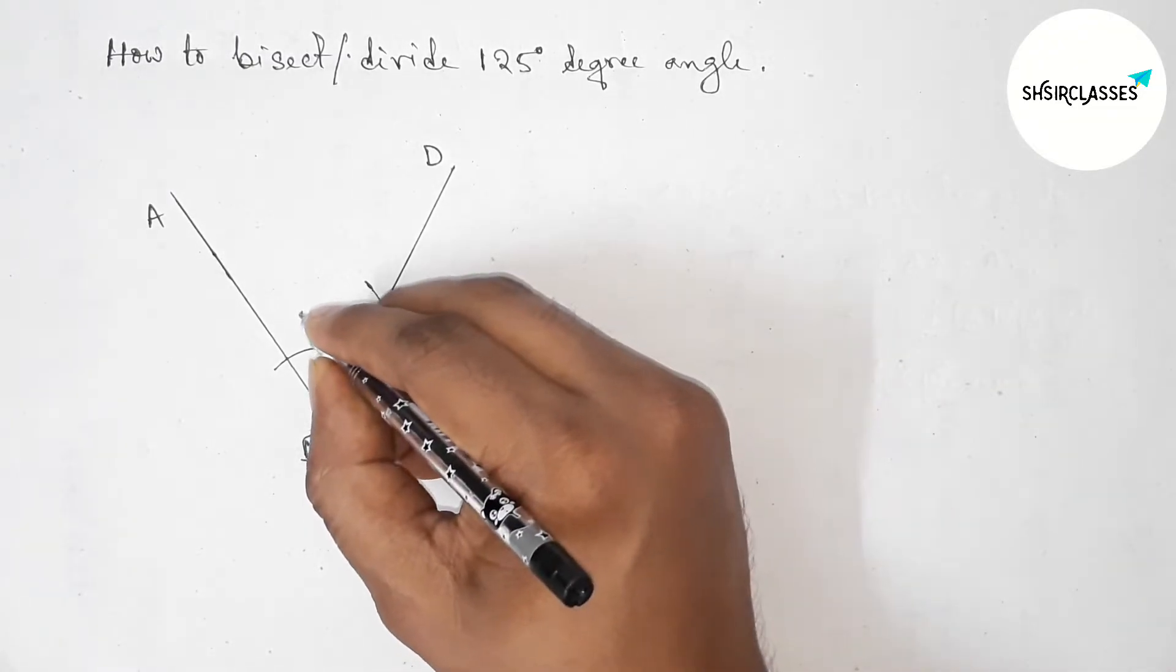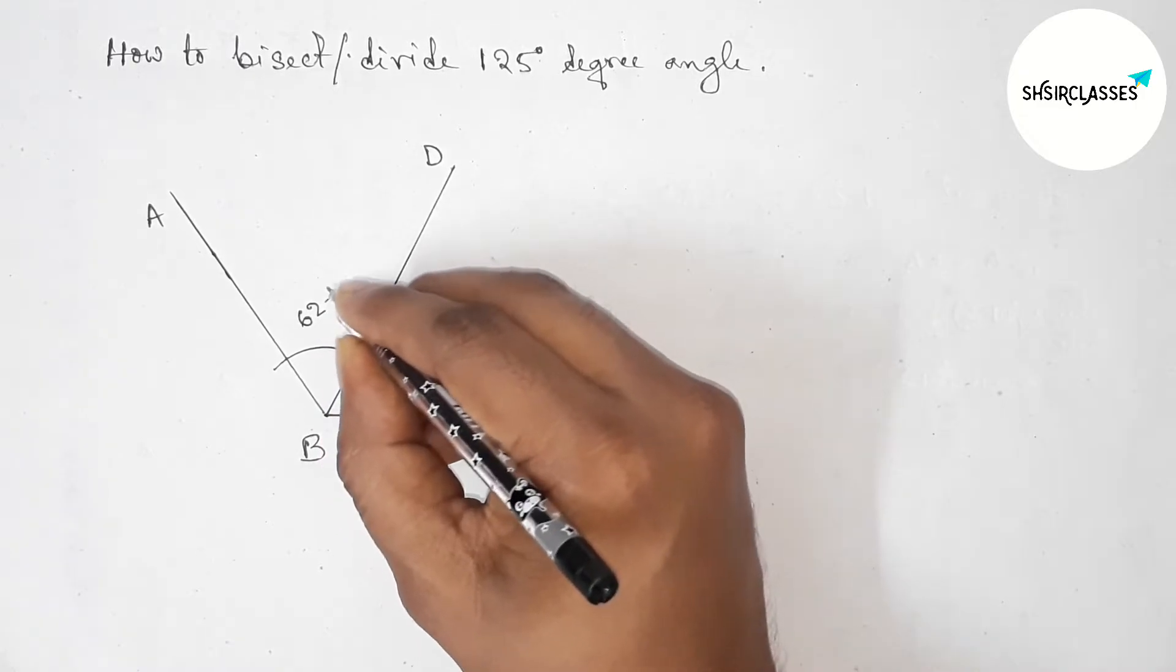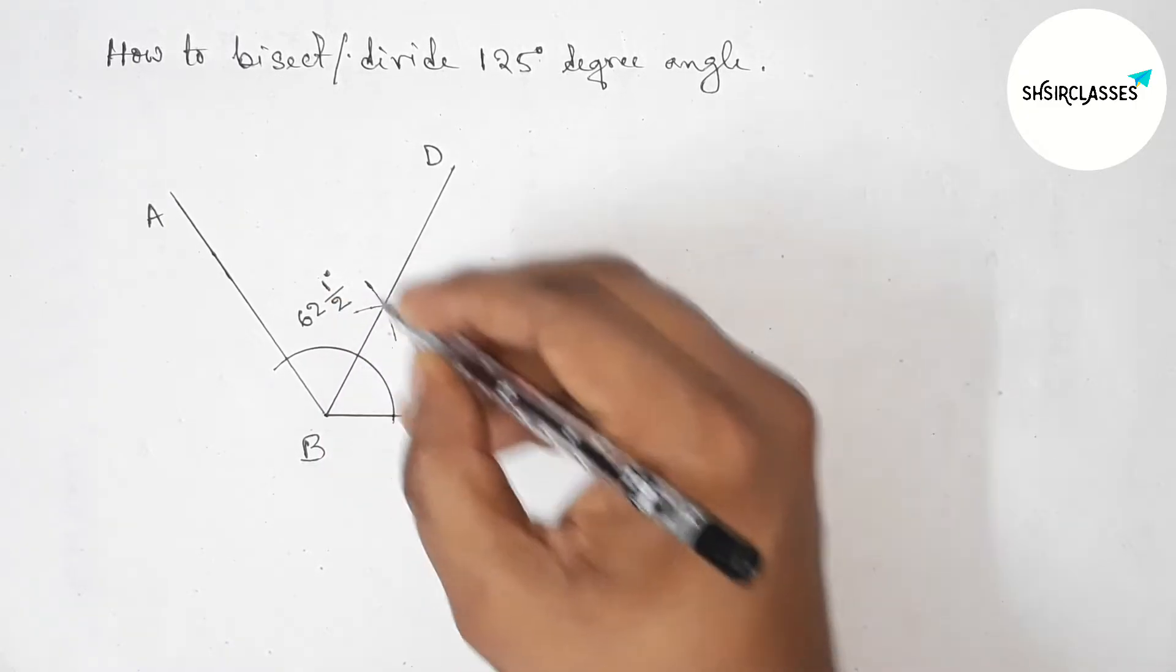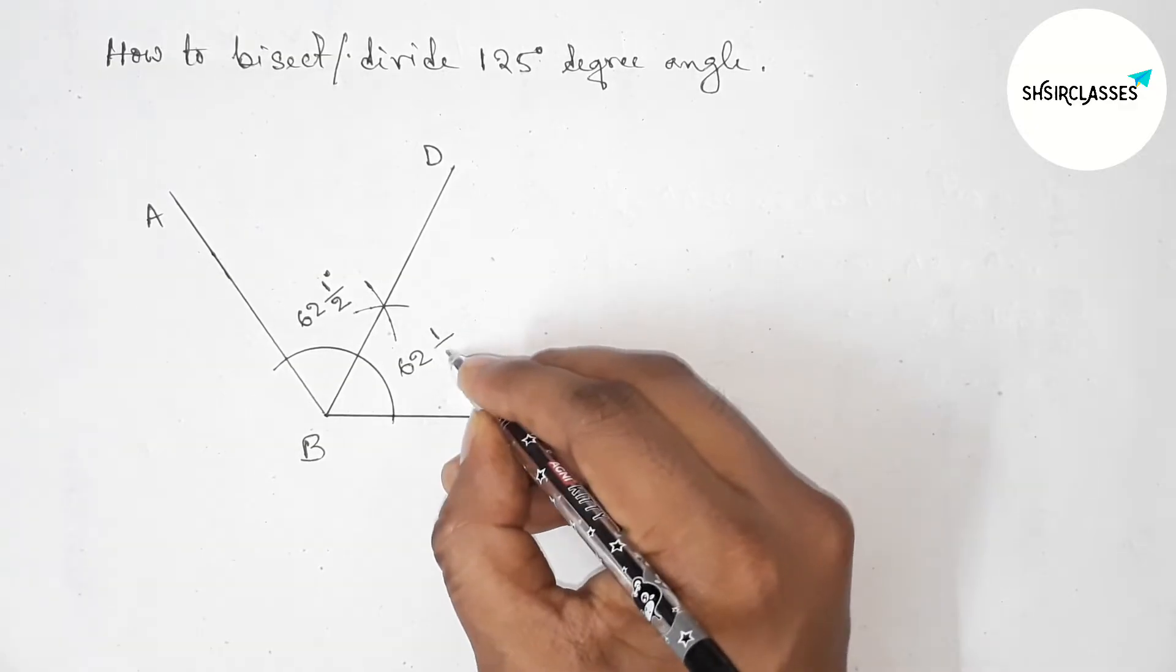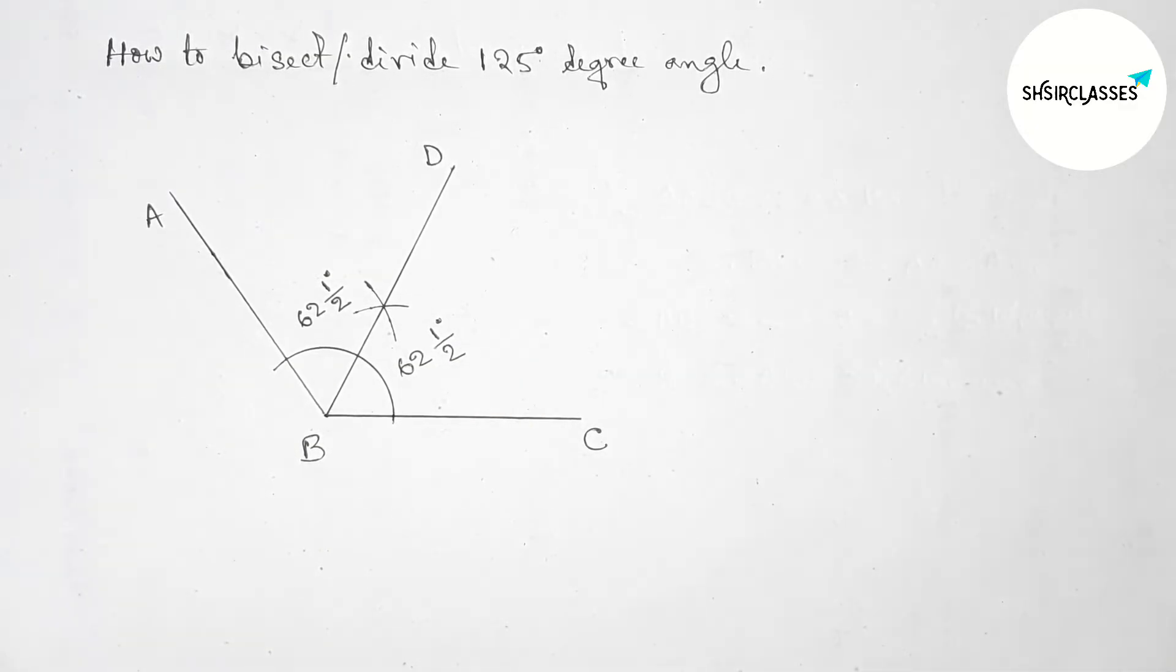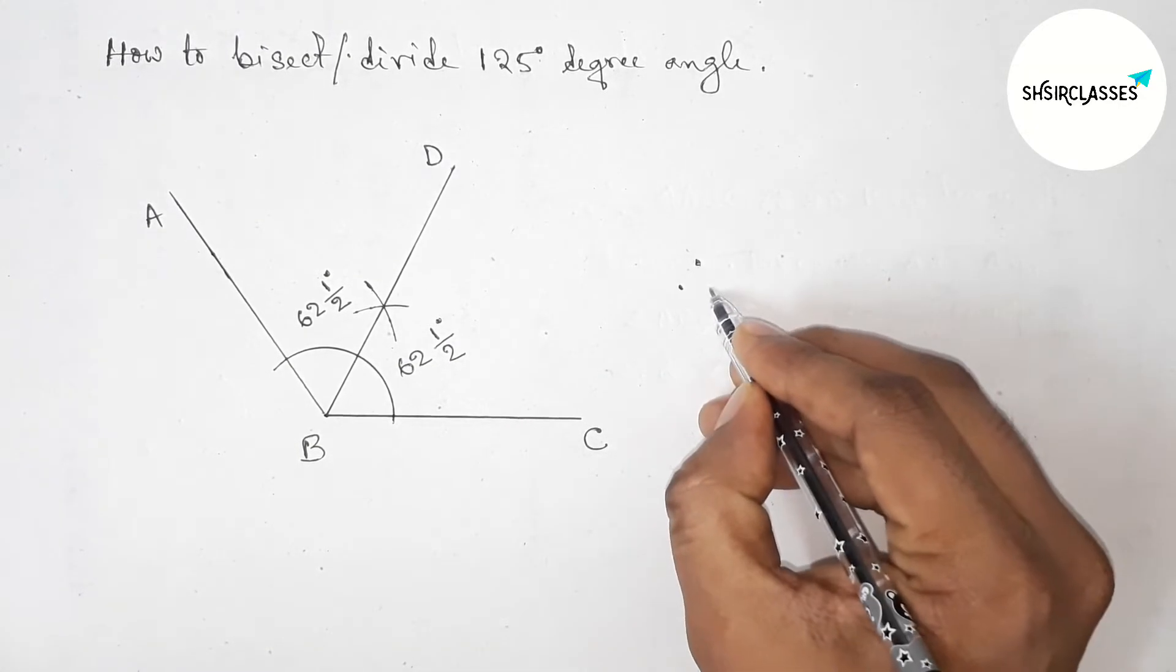this is 62 1/2 degree angle, and angle DBC, this is also 62 1/2 degree angle.